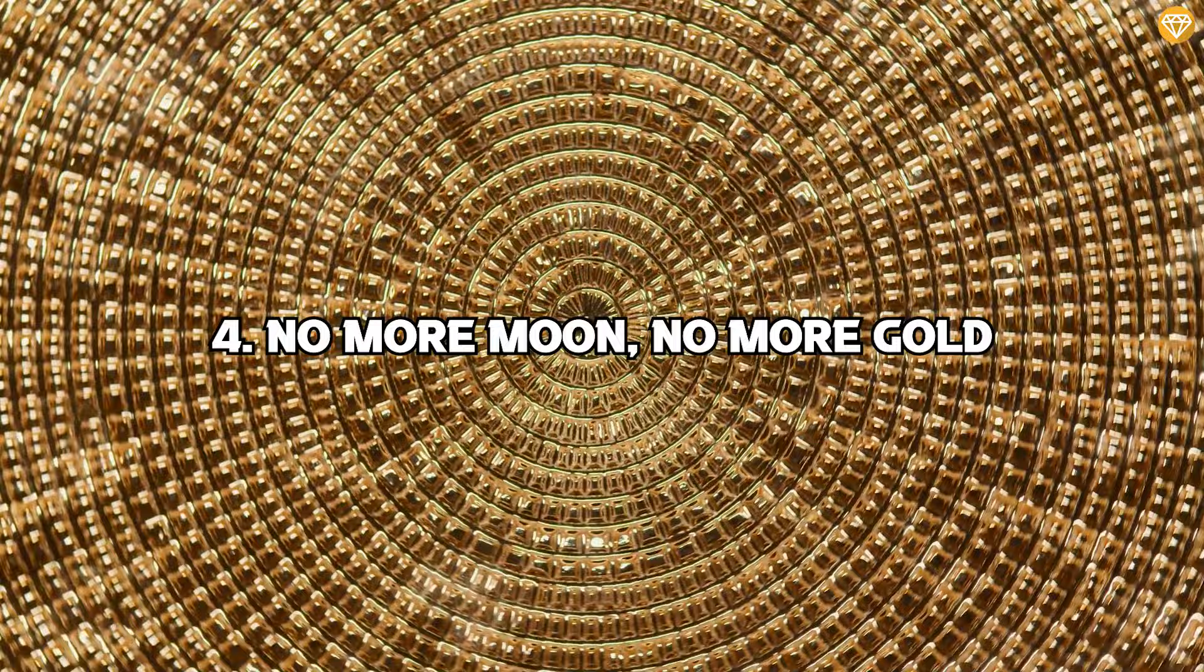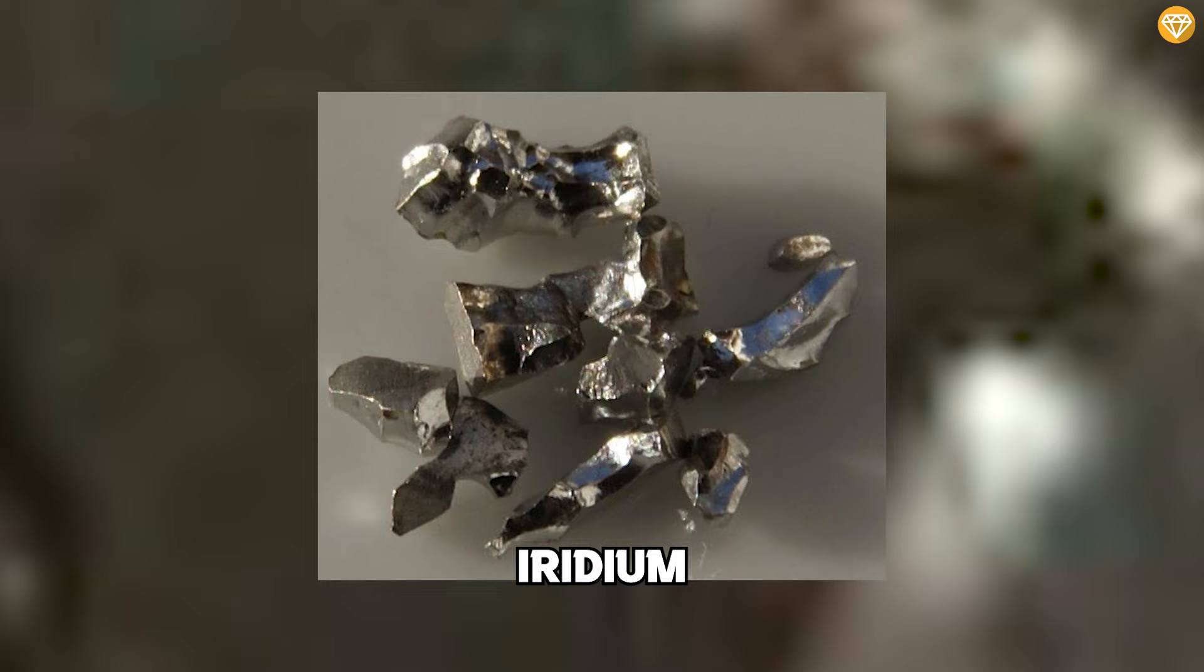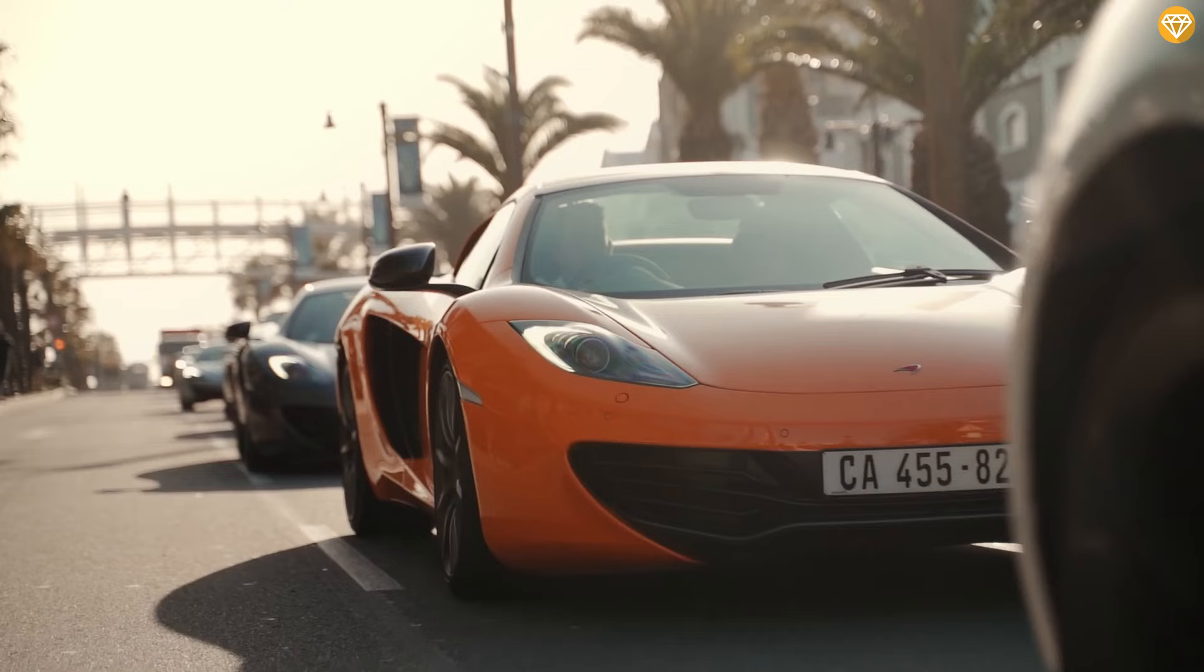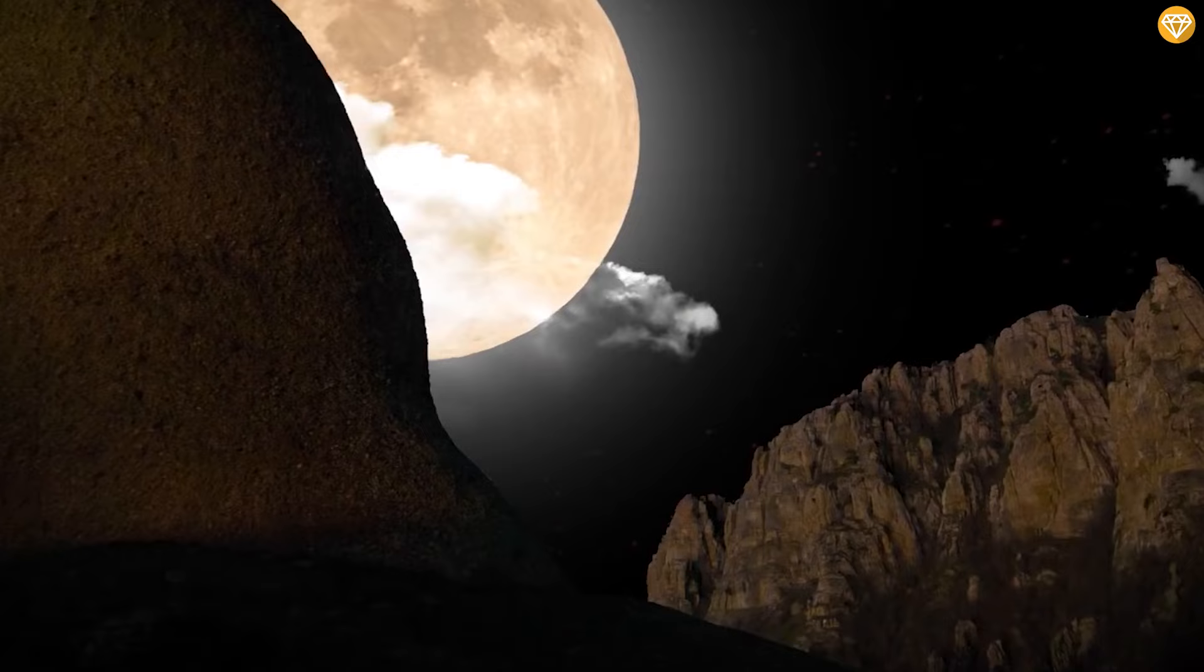4. No more moon. No more gold. Gold, platinum, palladium, iridium. These metallic elements have proved extremely valuable to our civilization. We have used them in all kinds of inventions, from cars and spaceships to electronics and jewelry. But again, it is likely that we would not have such materials without the moon. Why?